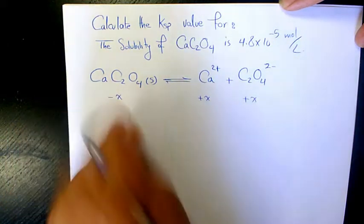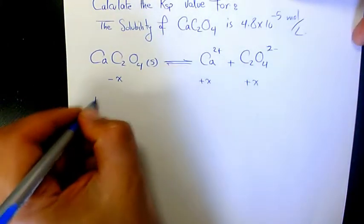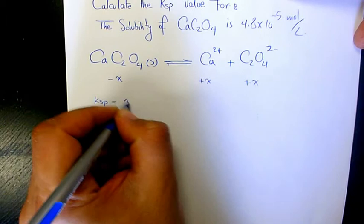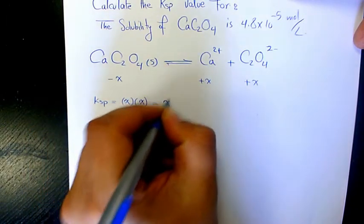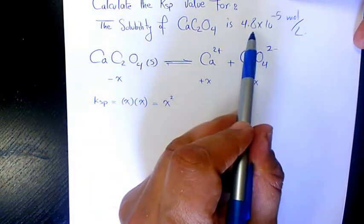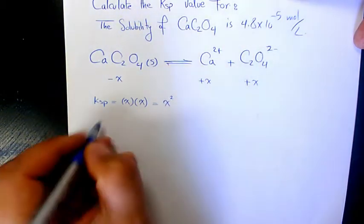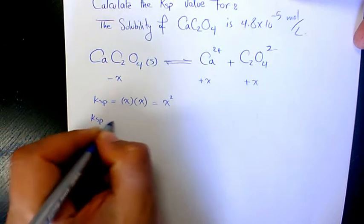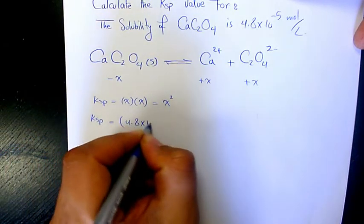So Ksp will be X times X, or X squared. And X is the solubility, which is 4.8 times 10 to the power of negative 5. So Ksp will be equal to 4.8 times 10 to the power of negative 5 squared.